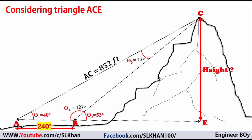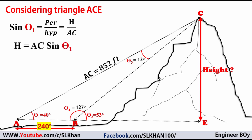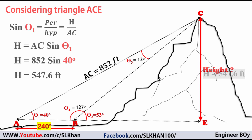With the hypotenuse AC of triangle ACE known, we can calculate the perpendicular — the height of the mountain. Using trigonometric ratios: sine of theta 1 equals the perpendicular over the hypotenuse, which is H divided by AC. Solving for H: H equals AC times sine of theta 1. Plugging in: H equals 852 times sine of 40 degrees, which gives H equals 547.6 feet.